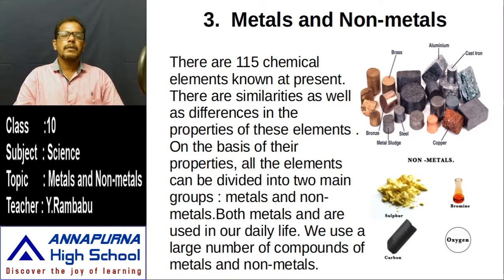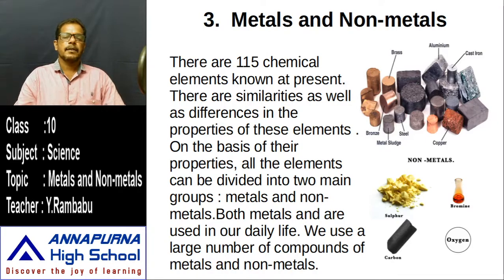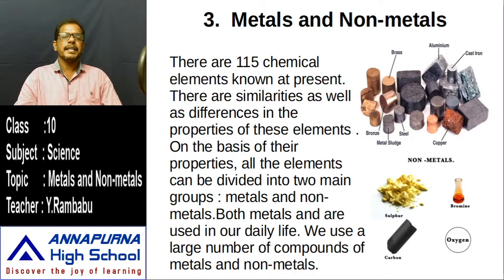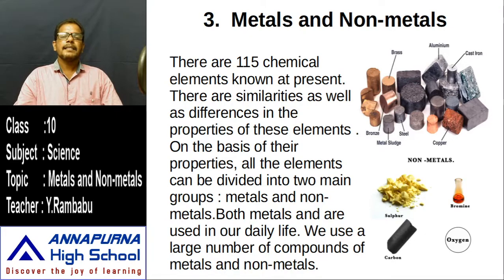Till today, scientists have discovered 118 elements, of which 3 are predicted, meaning 115 elements are known at present — from hydrogen to oganesson. These 115 elements are classified into three categories: metals, non-metals, and metalloids or semi-metals.